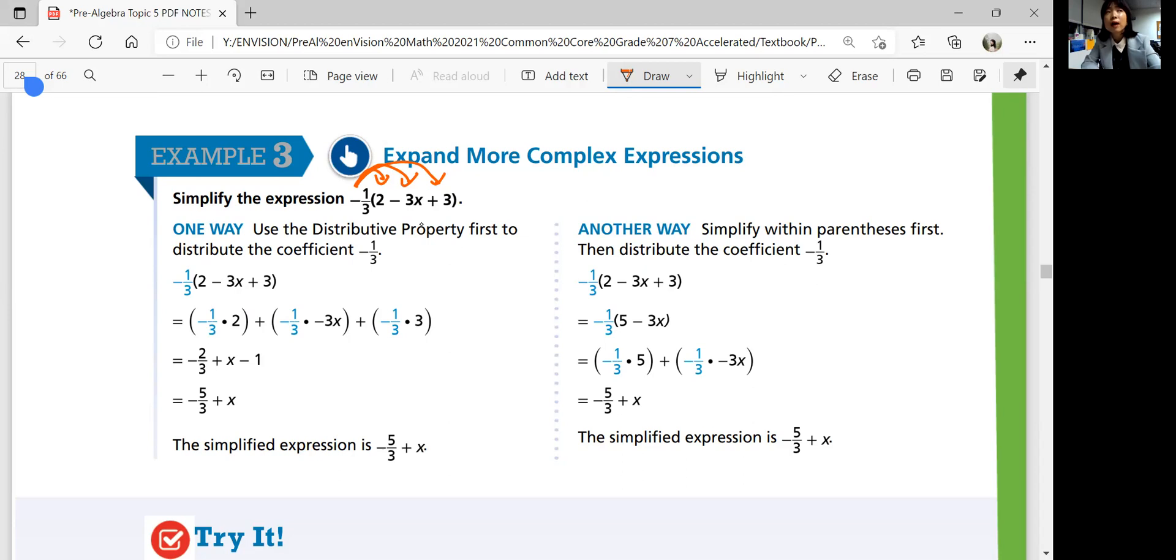So you can distribute negative 5 over 3 to the first, second, and third term separately. And then add the like terms. These constants could be added together and simplify to negative 5 over 3. So your expression becomes negative 5 over 3 plus x.